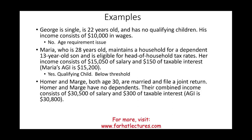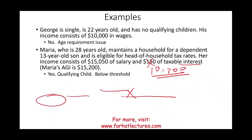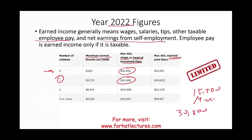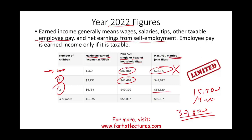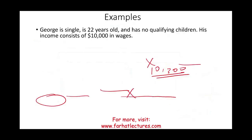Homer and Marsh, both age 30, are married filing jointly with no dependents. Their combined income is $13,500 in salary plus $300 in taxable interest, totaling $30,800. With no children, the married filing jointly limit is $22,610, so they don't qualify at $30,800. However, if they had one child, the limit would be around $49,622 and they would qualify. With two or three children, the limit is $55,529 and they'd qualify as well.